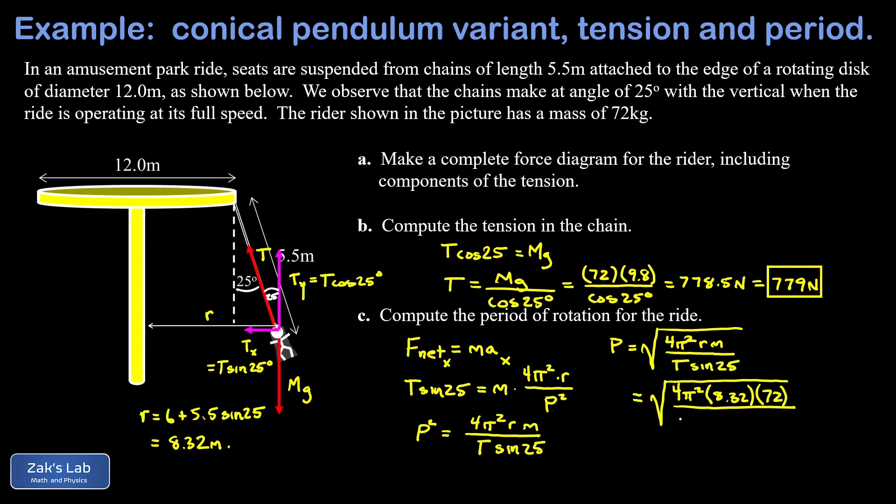All divided by the tension in the chain, and we're going to use our more precise number for this: 778.5 times the sine of 25 degrees. When we run the numbers on this to three significant digits, we get 8.48 seconds, and we're done.